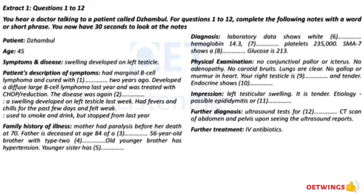Your previous illness and surgeries? I had B-cell lymphoma and diffuse large cell lymphoma. I had a splenectomy. Are you taking any medications? No, Doctor. Are you allergic to any medications? No, Doctor. May I know your family history of illness? Well, my mother had paralysis before she died at 70. My father is deceased at the age of 84 of a head and neck cancer. My 56-year-old brother has type 2 diabetes and blindness secondary to diabetic retinopathy. My 41-year-old younger brother has hypertension and my younger sister has thyroid disease.